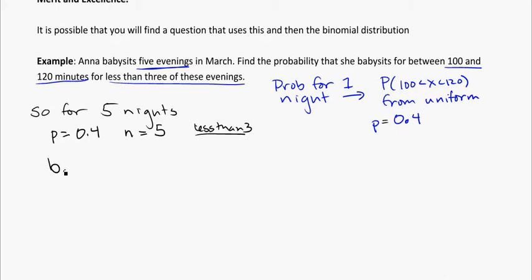If we want to do this, we're going to use our binomial, and this is going to be a range, so BC. And we're looking at 0, 1, 2, 3, 4, 5. So of the five evenings that she babysits, less than three of these evenings between those values, so less than three.